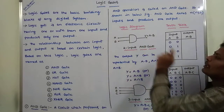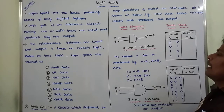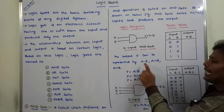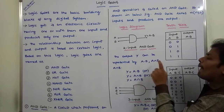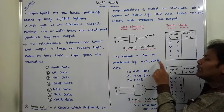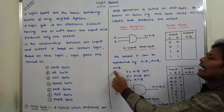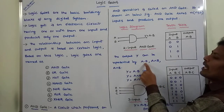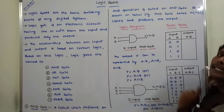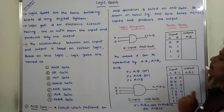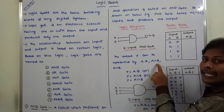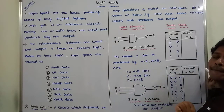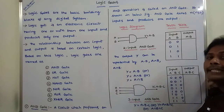So Y is equal to A dot B. The output Y can be represented either as A dot B, or A ∧ B, or A ∩ B. These three symbols are used to represent the AND operation: the dot symbol, the inverted-V (∧) symbol, and the intersection (∩) symbol.